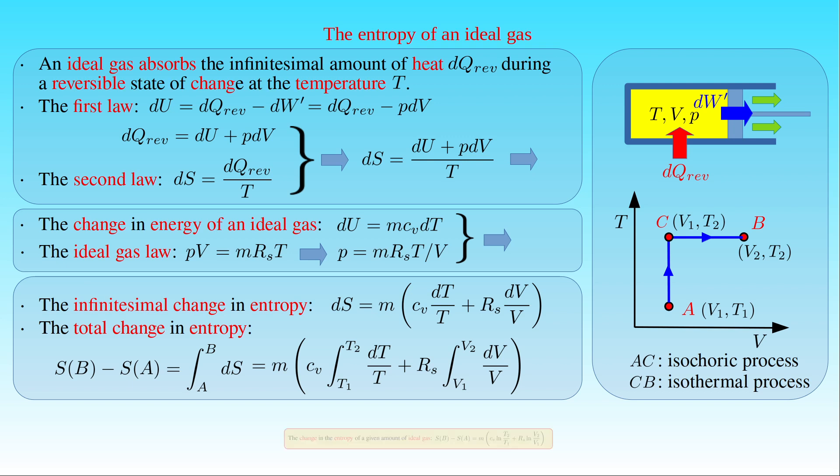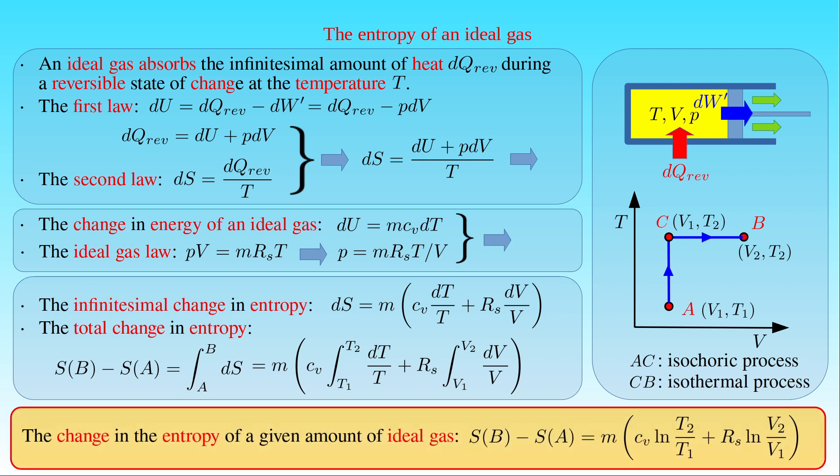By performing the integration, we conclude that the change in entropy S of an ideal gas in a reversible transformation from state A to state B is given by its mass M times the sum of the specific heat capacity C_V times the natural logarithm of the ratio T2 to T1, and its specific gas constant R_S times the natural logarithm of the ratio V2 to V1.